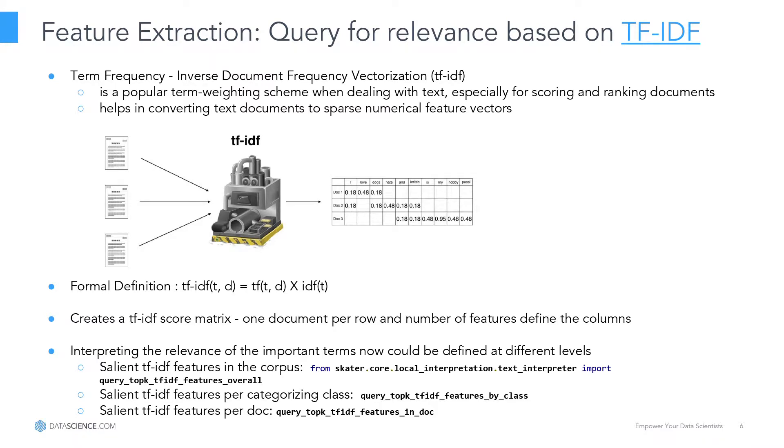Going back to the last topic we were discussing — TF-IDF. When we get a text corpus, the first thing we're faced with is raw text. To make a machine learning algorithm work, we have to do some transformation. TF-IDF is a very common transformer that we typically use. It's popular because not only does it count the number of terms in the document, but it also normalizes on the relevance of that particular term in the complete corpus. So TF-IDF is defined as the dot product of term frequency and its inverse importance in the document.